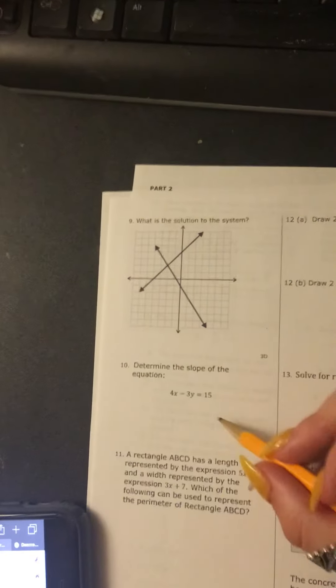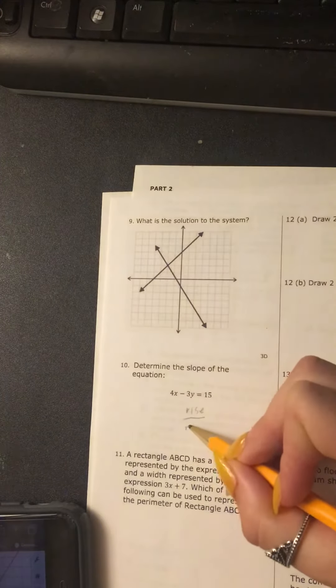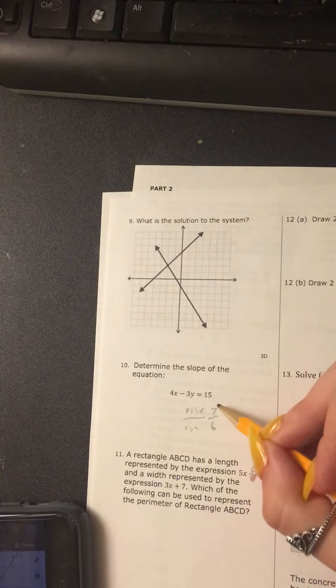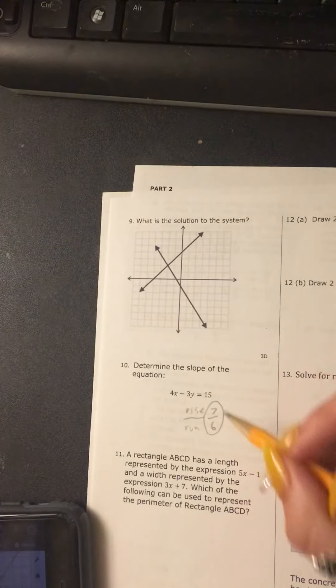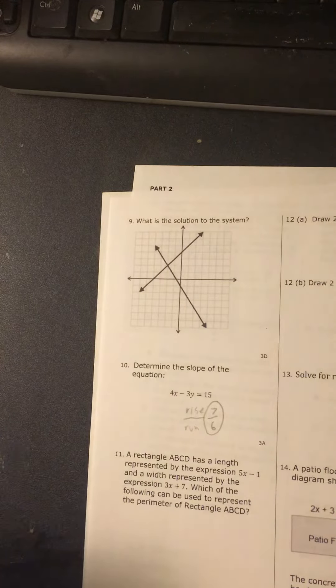So you rise over run. And it's 7 over 6. And that will be your slope. I'll see you next time.